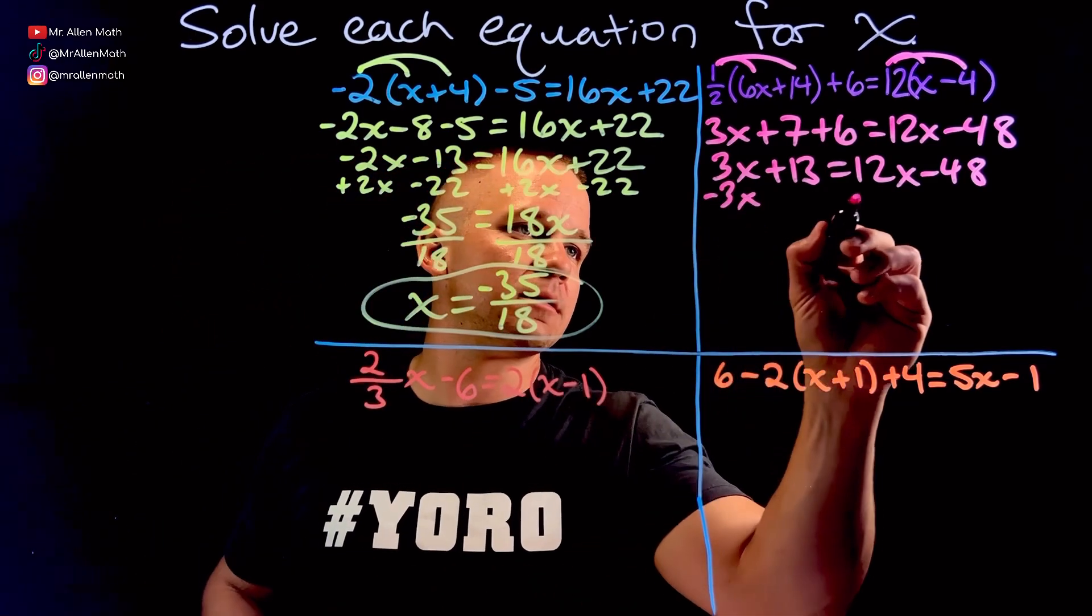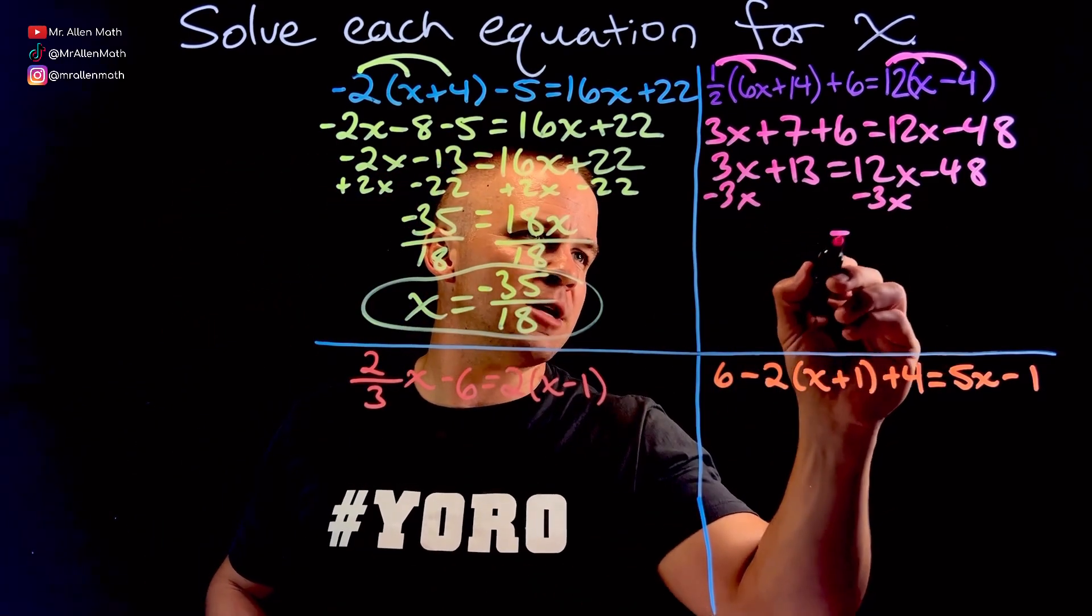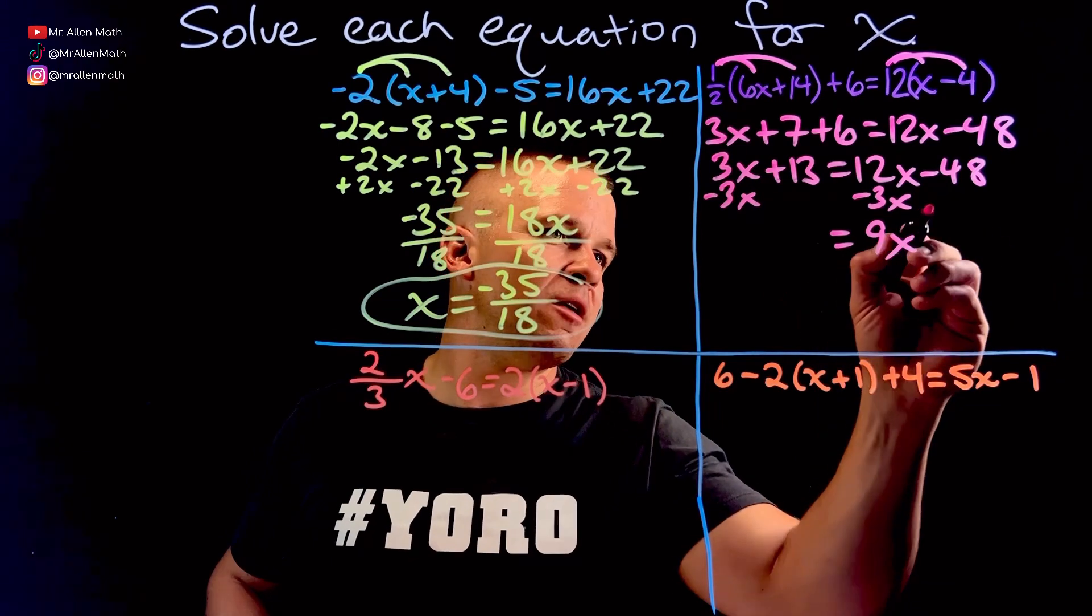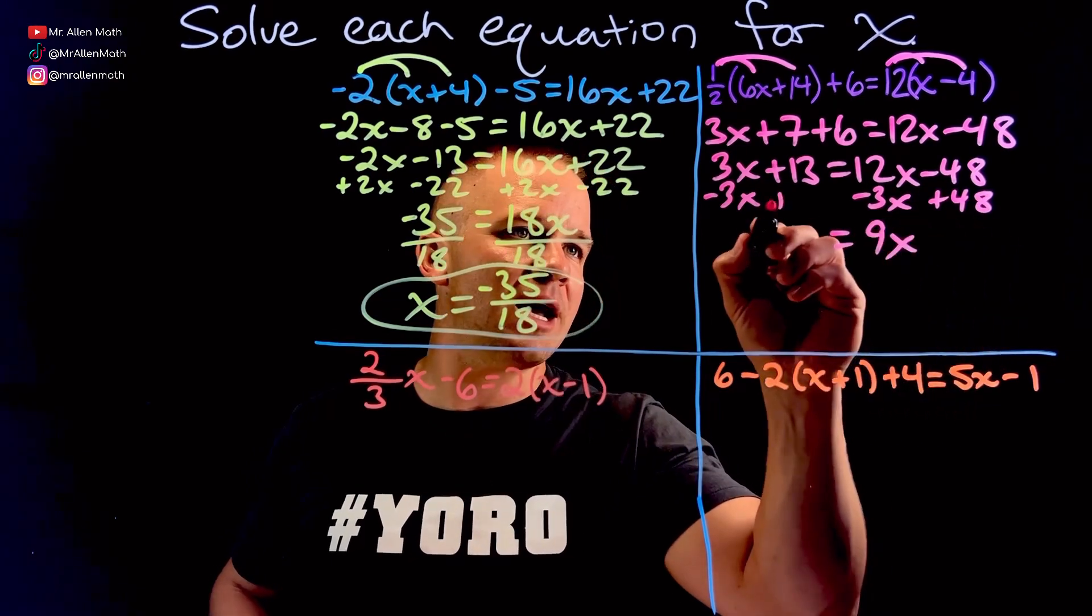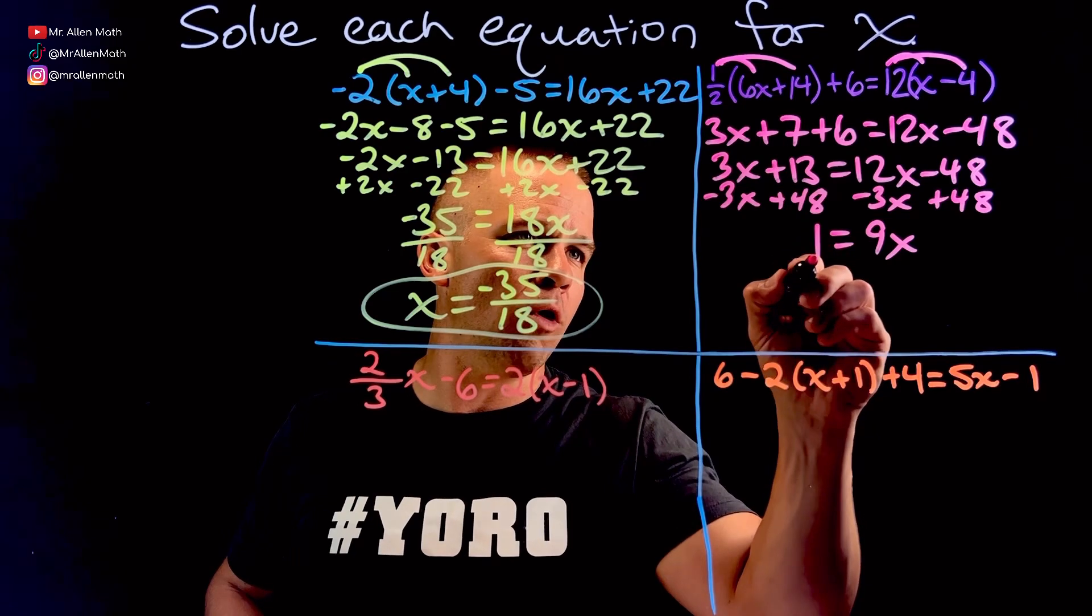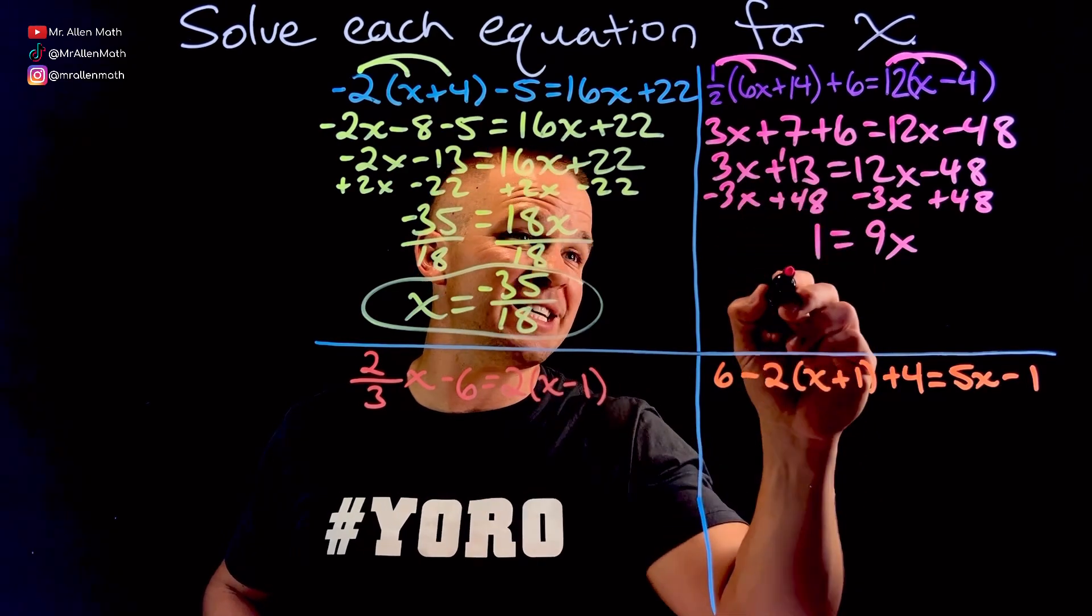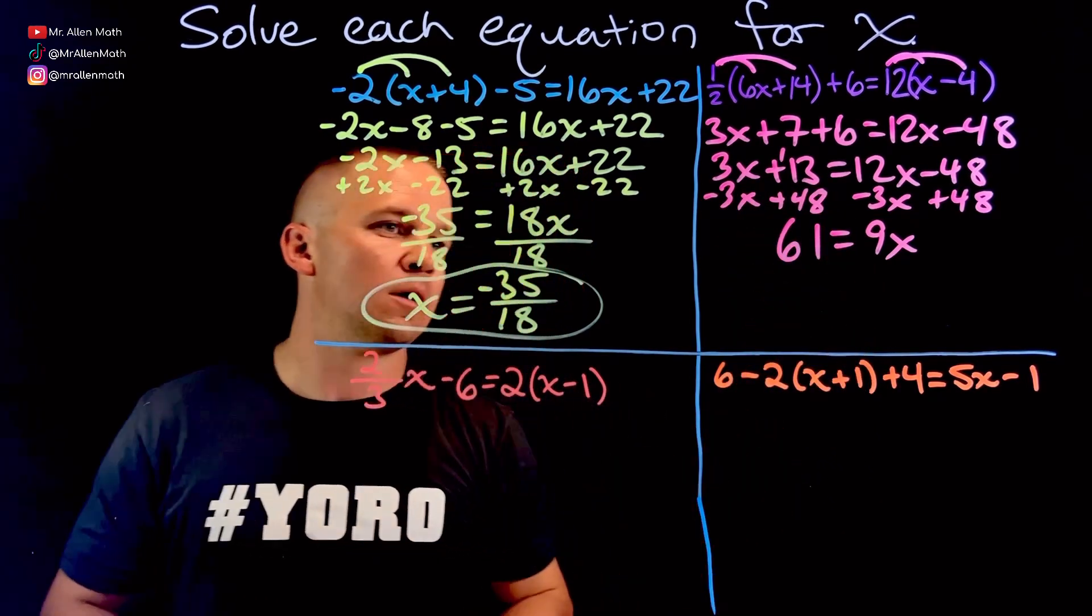So we're going to subtract 3x. So we got ourselves 9x right here. Then I'm going to add 48, add 48. So that's going to give me, let's see here, probably 1 up here. That's going to be 61.